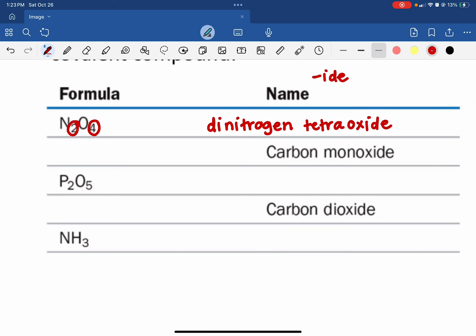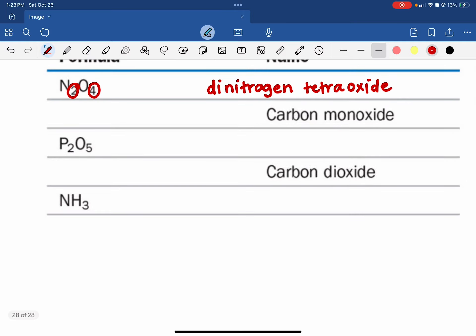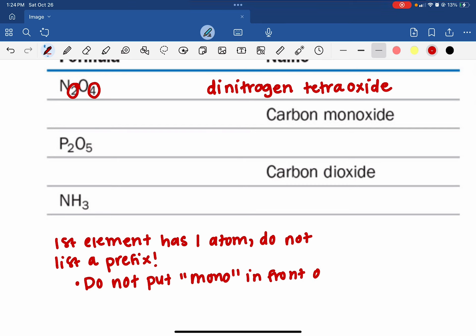For the second one, there is one exception to the naming rule, and that is if the first element has one atom, you do not list a prefix, which ultimately means you do not put mono in front of the element. So this is for the first element only. The second element will always have mono in front of it. So in this case, we don't say monocarbon monoxide, we say carbon monoxide.